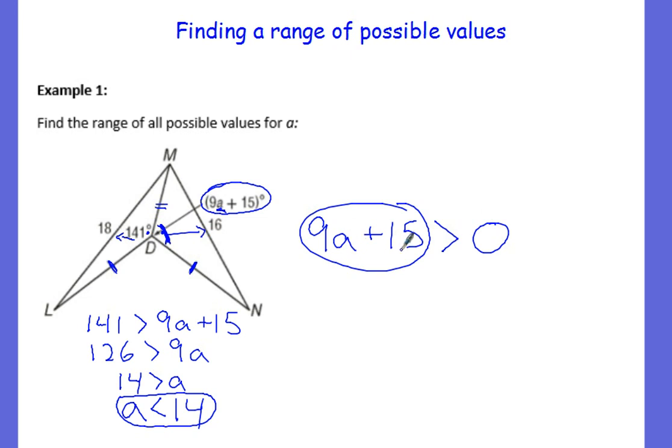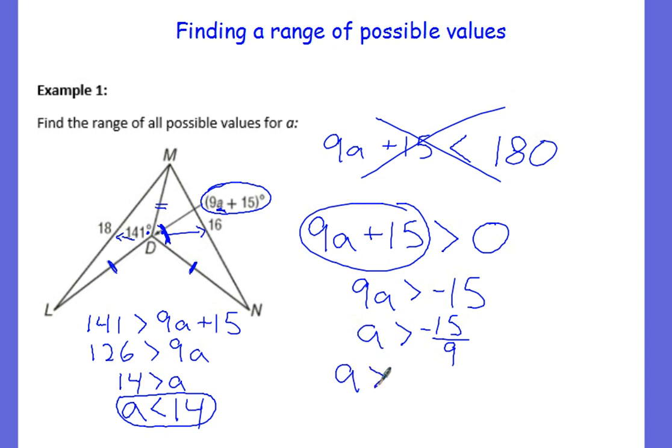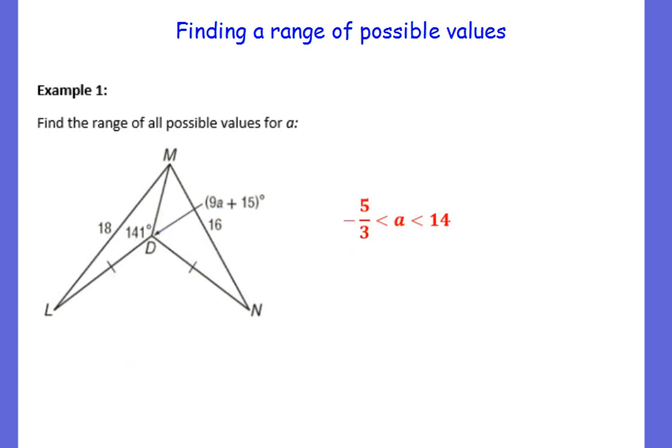So we're going to put 0 there. Now if we were trying to find what a is less than, let's say we already knew what it was greater than and we were looking for what this angle is less than. In that case, you would think, angle measurements, what are they less than? Well, angles are always between 0 and 180 because 180 degrees would be a straight line. So we would make that less than 180 and solve it. Which will happen in some problems, but not in this one. So right here, we're solving this, so subtract 15. We get 9a is greater than negative 15. Divide both sides by 9, so a is greater than negative 15 over 9. Simplify that fraction. So a is greater than negative 5 thirds, and that is the remaining part of your answer. A is less than 14 and greater than negative 5 thirds, and we will write that like so as a compound inequality.